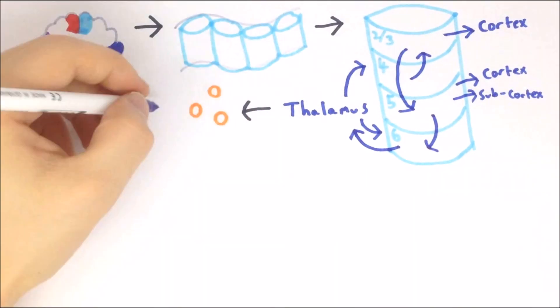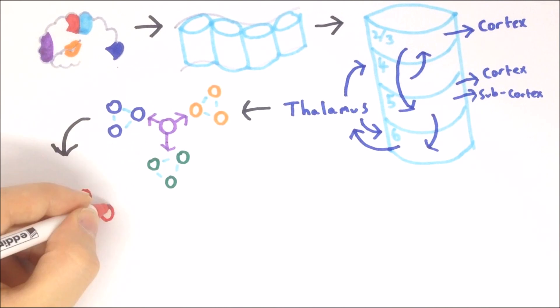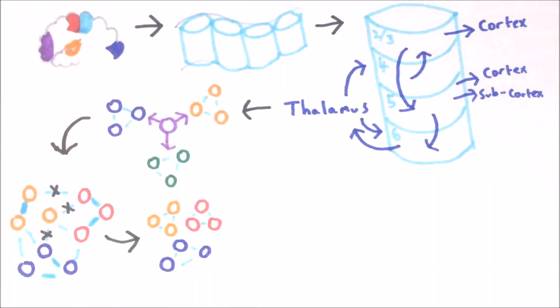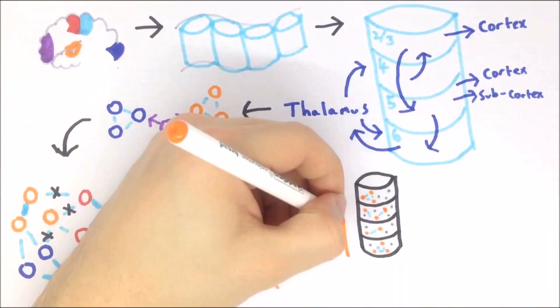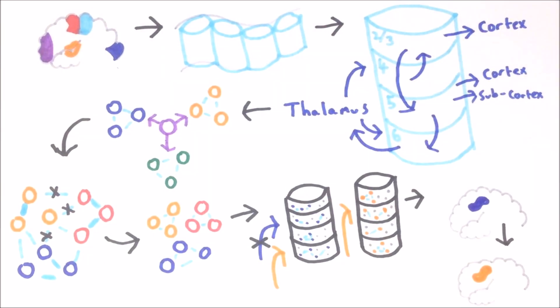In most layers of the neocortex, neurons encoding the same features connect preferentially to each other, forming sub-networks, whilst inhibitory neurons provide general inhibition to surrounding neurons. These sub-networks are formed through synaptic plasticity, with connections between neurons active at the same time strengthened and connections between neurons active at different times weakened. If the input to an area of cortex changes, different combinations of neurons will be active at the same time, and synaptic plasticity will result in the formation of new sub-networks. This allows an area of cortex to change how it processes information, and therefore what function it performs.